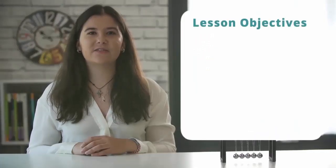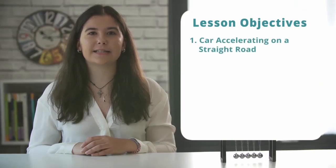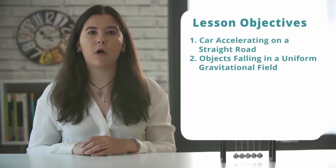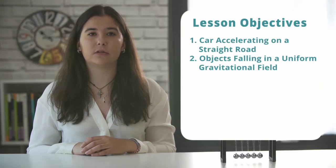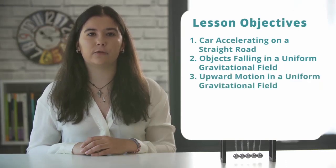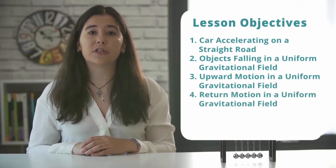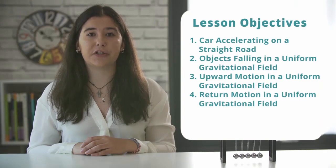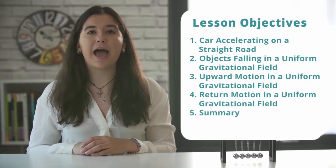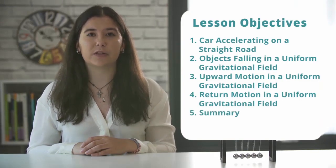Hi guys. In this video we're going to be looking at a car accelerating on a straight road, objects falling in a uniform gravitational field, upward motion in a uniform gravitational field, return motion in a uniform gravitational field, and we're going to finish with a summary.